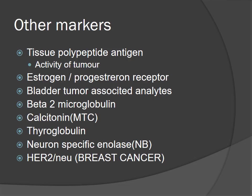Other tumor markers include: tissue polypeptide antigen, estrogen and progesterone receptors, bladder tumor-associated analytes, beta-2 microglobulin, calcitonin, thyroglobulin, neuron-specific enolase, and HER2/neu in breast cancer.